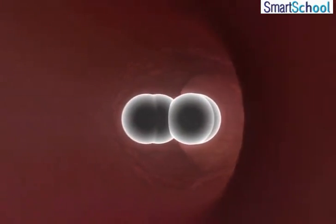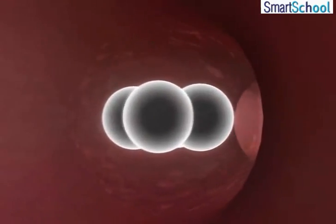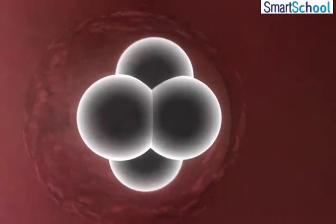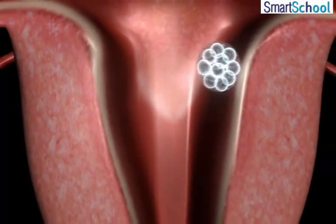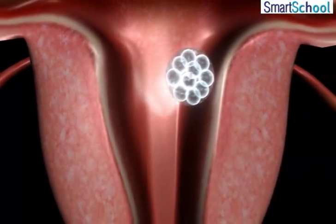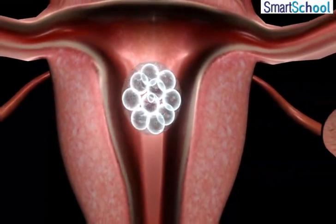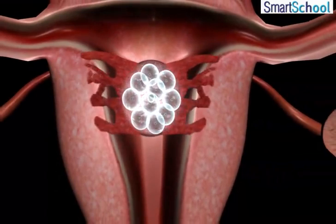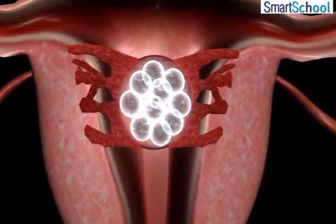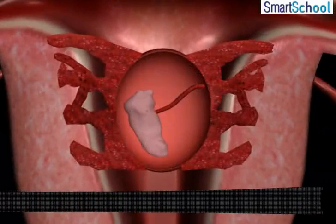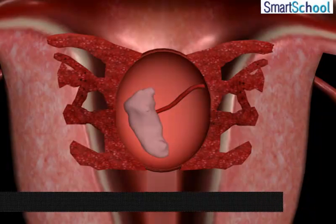This zygote divides repeatedly to give rise to a ball of cells. The cells then begin to form groups that develop into different tissues and organs of the body. This developing structure is termed as embryo.